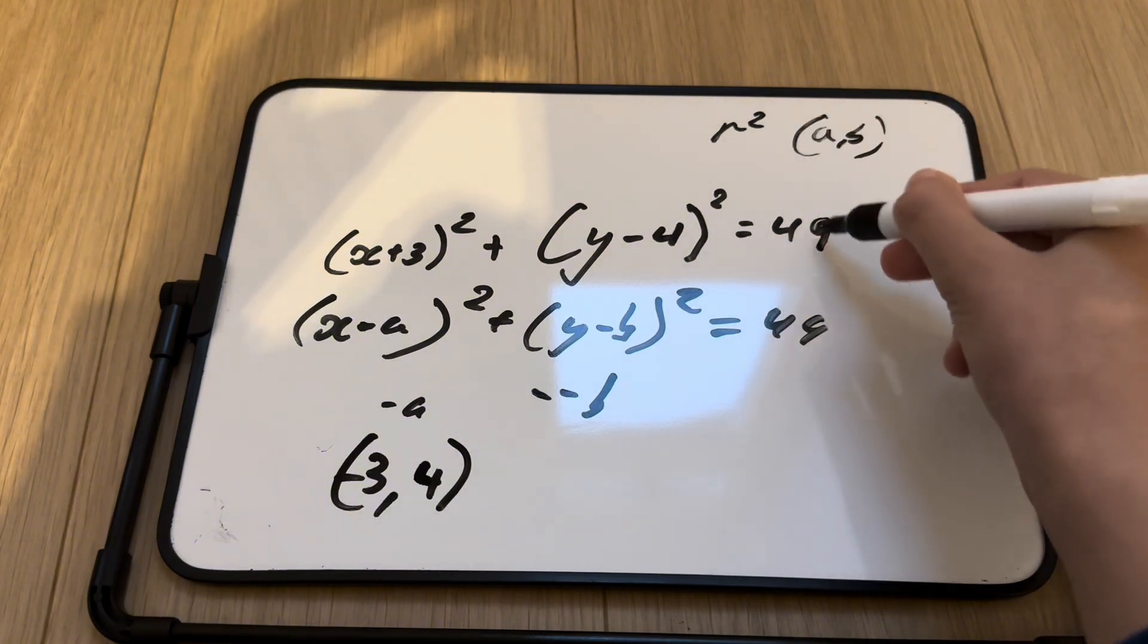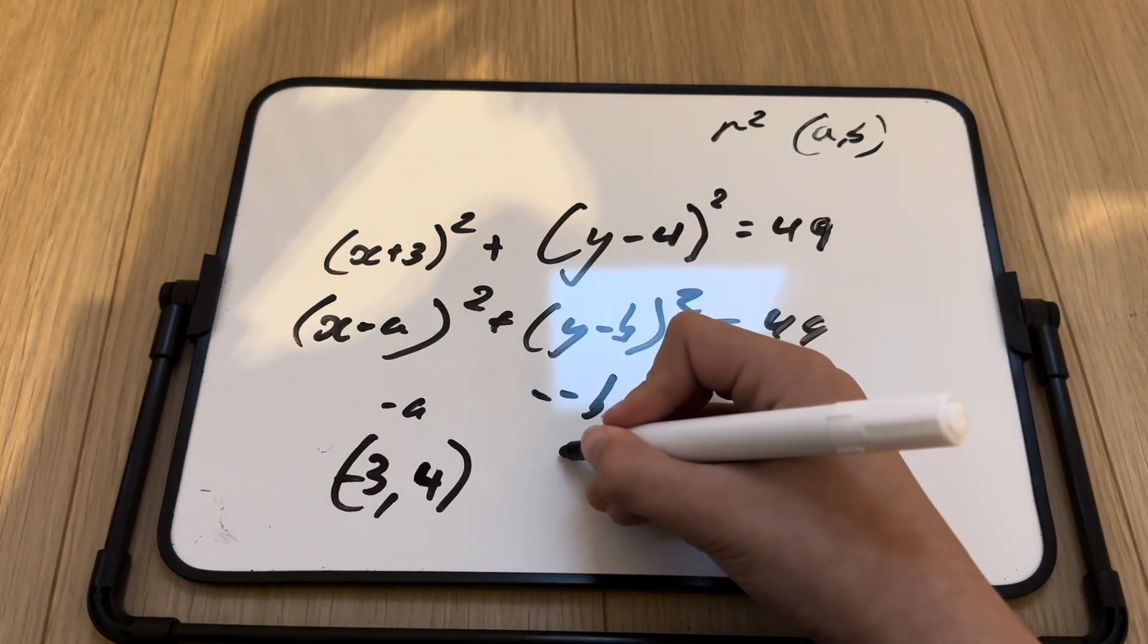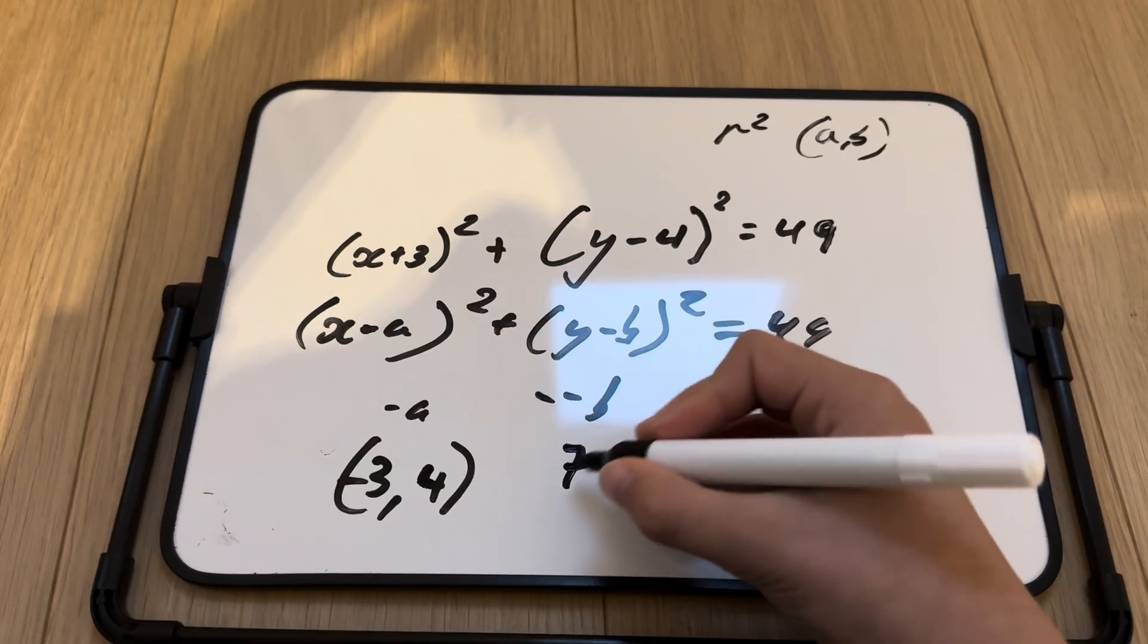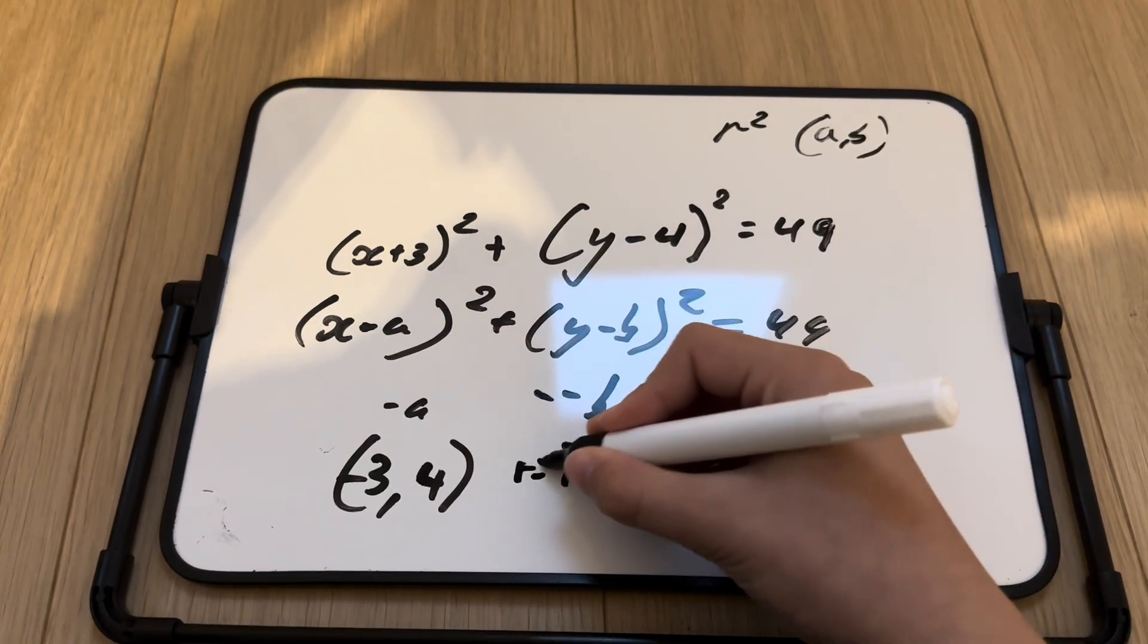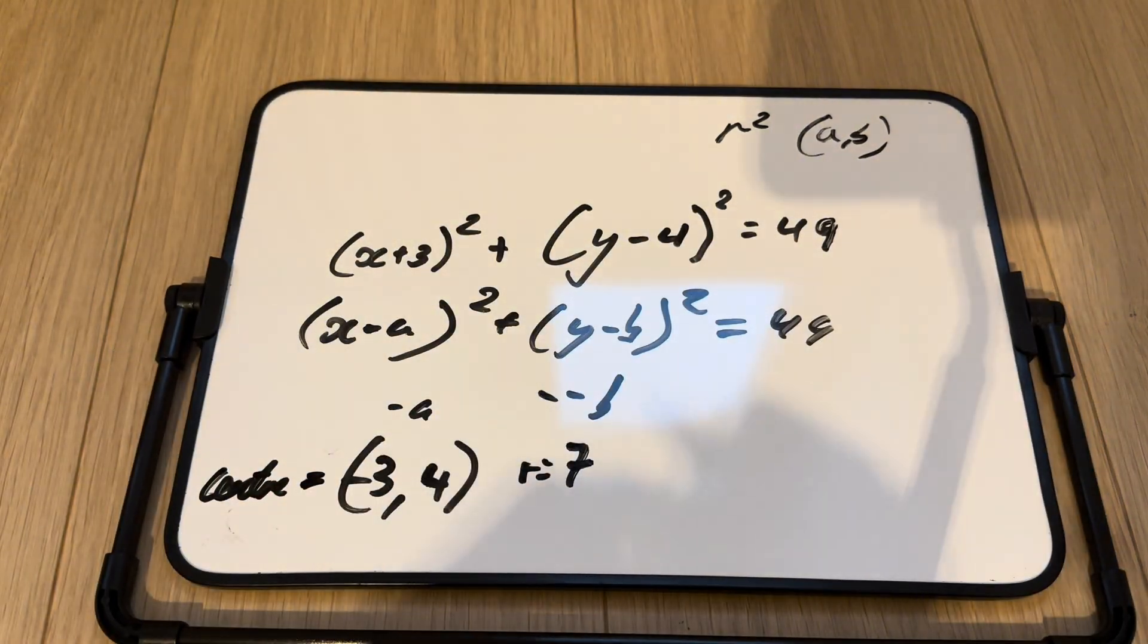And, don't forget that R squared is 49, so the square root of 49 is 7. So, the radius is equal to 7, center equal to negative 3 comma 4.